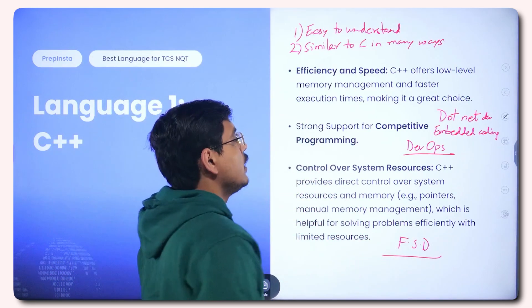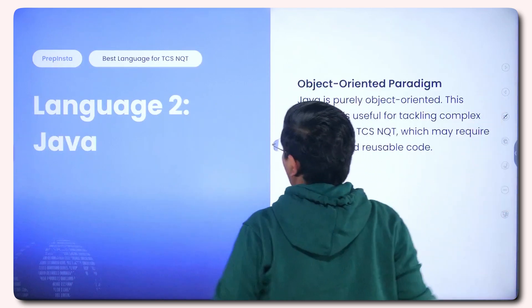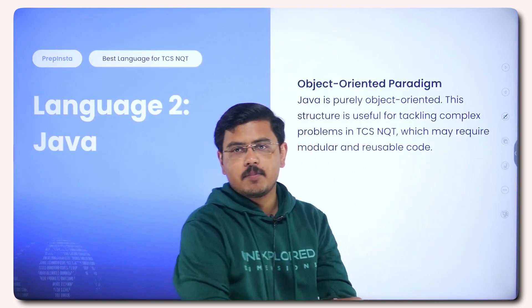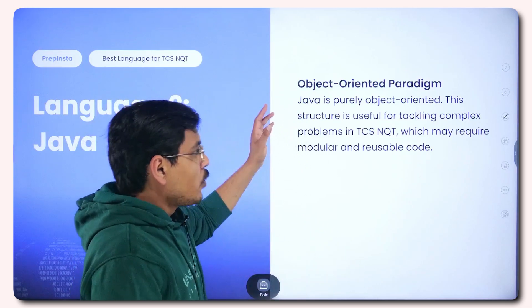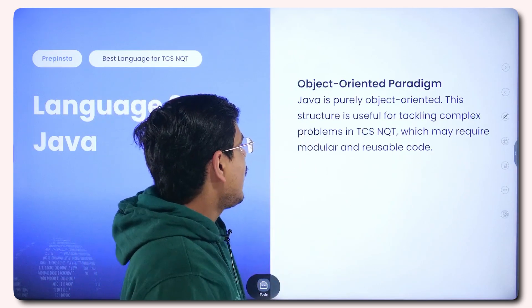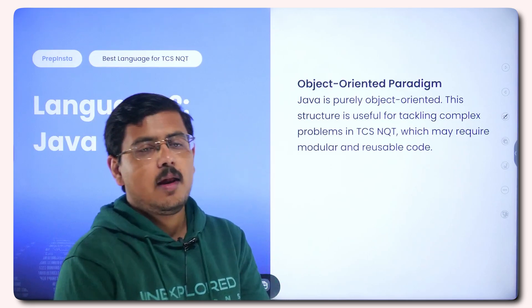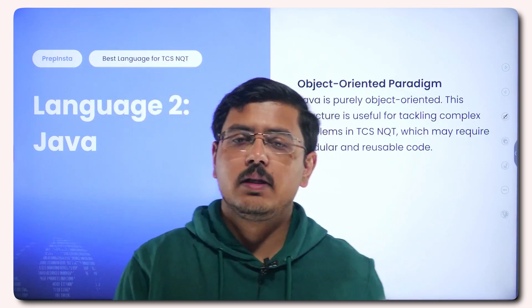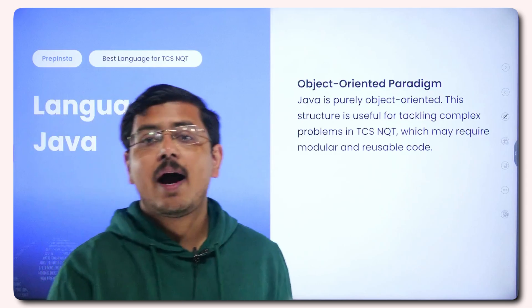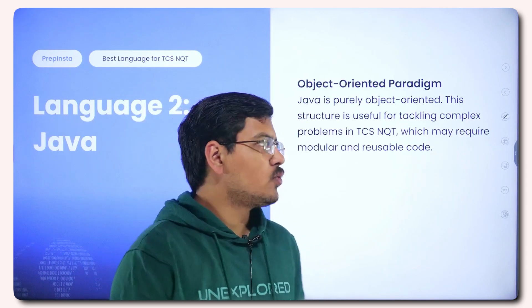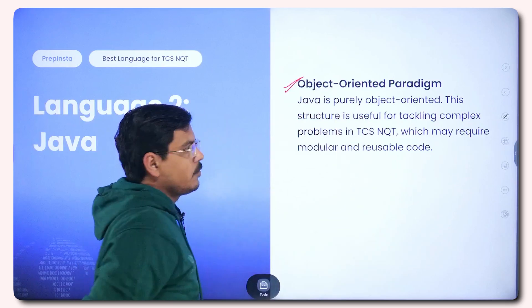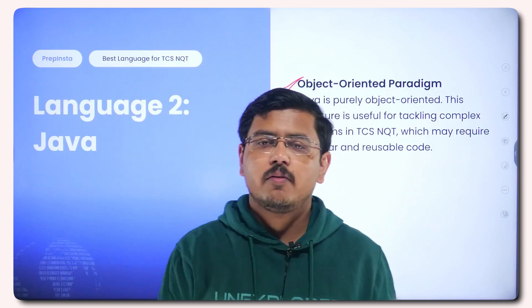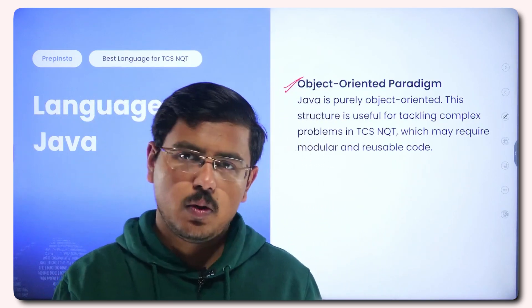But there are a few people who are comfortable with this language, Java. Why so? They have worked a lot in Java. This is purely object-oriented language. And this can also help in tackling the complex problems in TCS NQT because you have reusability in it. Reusable code. So this is something that object-oriented paradigm can help you. Java is a good language, no doubt.